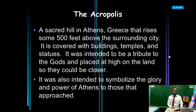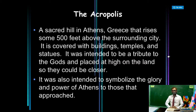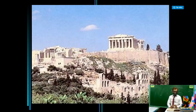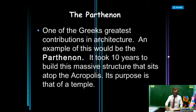The Acropolis — meaning the big city — is a sacred hill in Athens, Greece, that rises about 500 feet above the surrounding city. It is covered with buildings, temples, and statues, and was intended to be a tribute to the gods, placed high on the land so they could be closer.